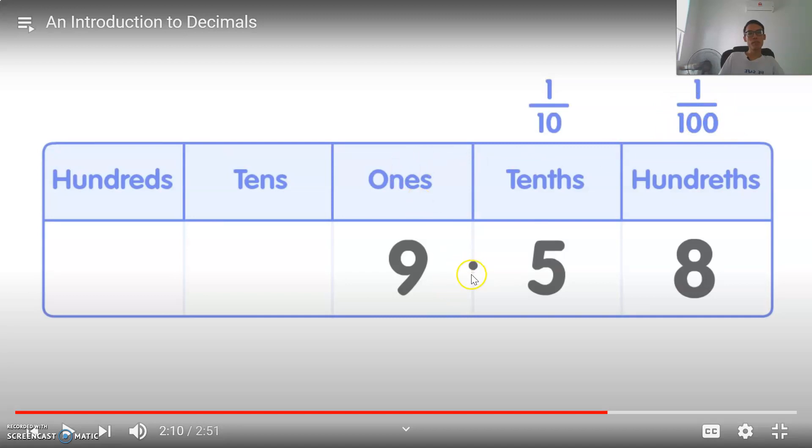Remember the ones, tens, hundreds, thousands—those are the place values for the numbers before the point. For the numbers behind the point, we call them tenths for the first number, hundredths for the second number.